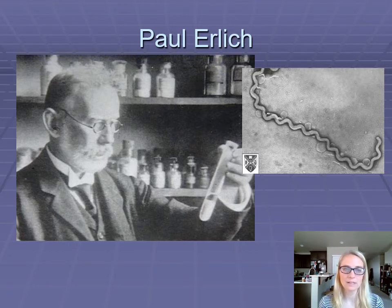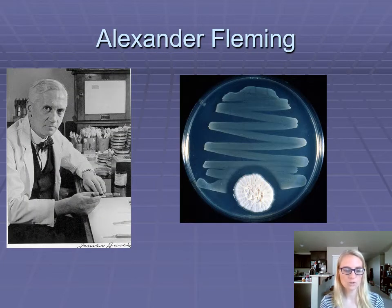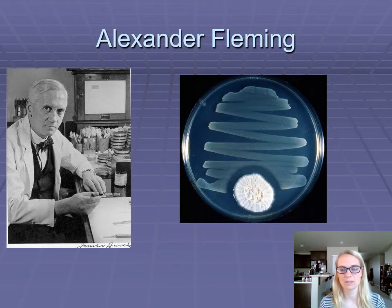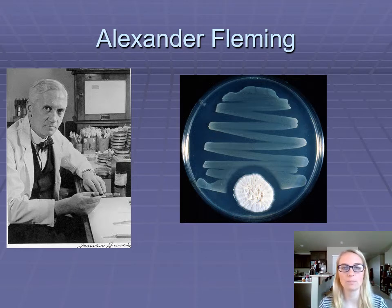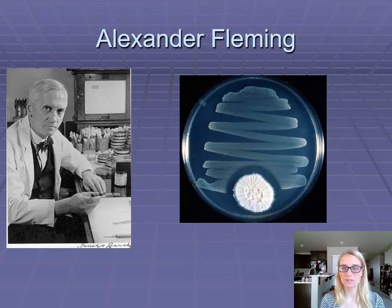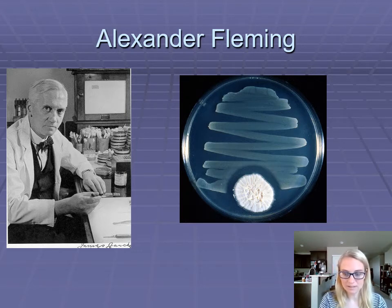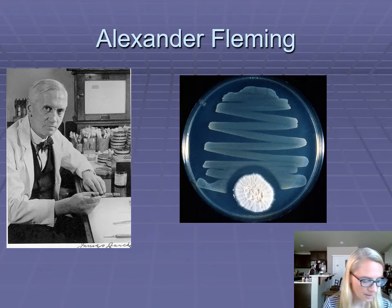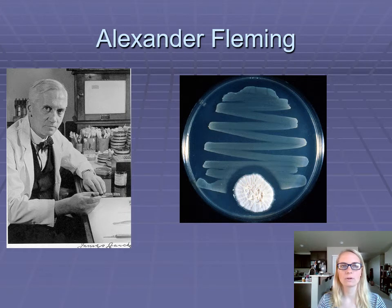Alexander Fleming discovered penicillin in 1929. There's a picture of him in his microbiology laboratory — a recreation — and there is the bacteria in a zigzag pattern with the fuzzy-looking growth, which is the fungus, and you can see the zone of inhibition. You'll be doing your Kirby-Bauer lab activity, which is exactly what he discovered: there was this contaminant fungus he wasn't planning on growing, but he observed it was killing the bacteria. So anything that could kill bacteria might be worth looking into.